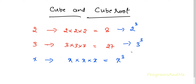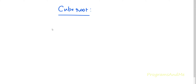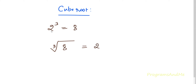Now, what is cube root? Cube root is a special value — when you cube that special value, you get the original value back. For example, if I cube 2 I get 8, so the cube root of 8 is 2. Cube root of 8 is the special value which, when multiplied thrice, gives the original value 8.